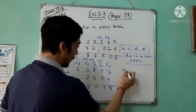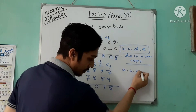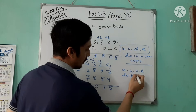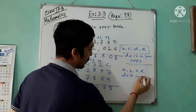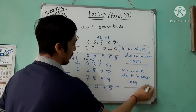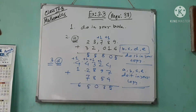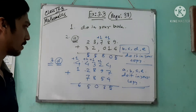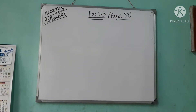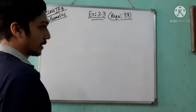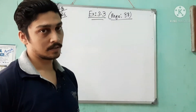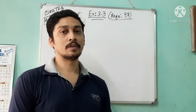Questions 3a, b, c, e — please do them in your copy. This is very easy and I know you will do it easily. Now the next part: if the order is changed, then the sum remains the same.